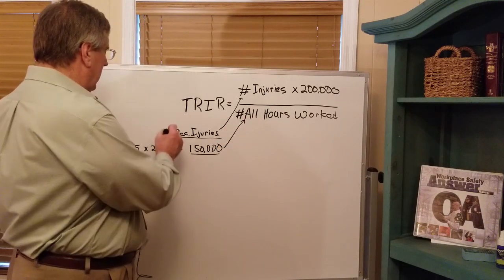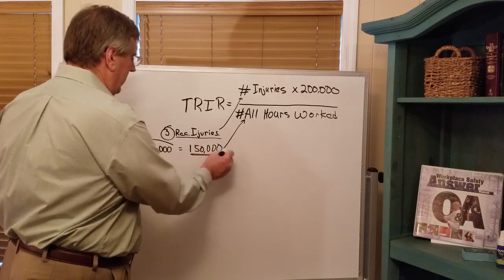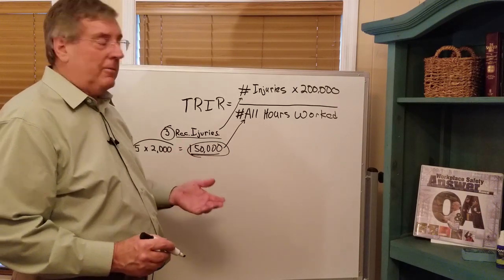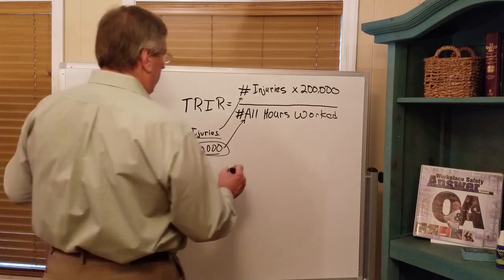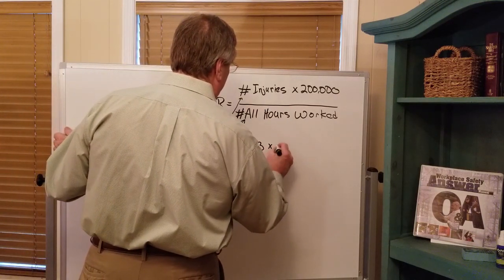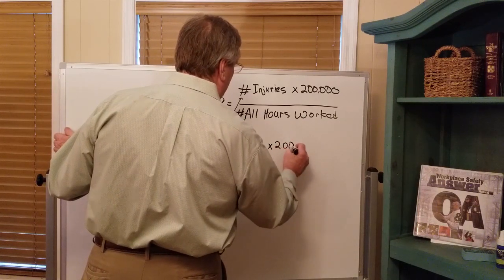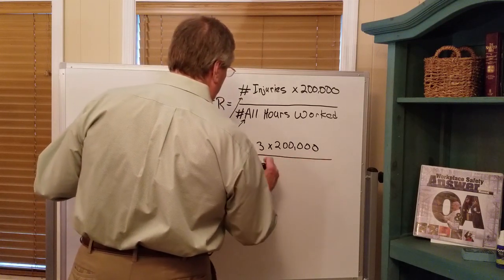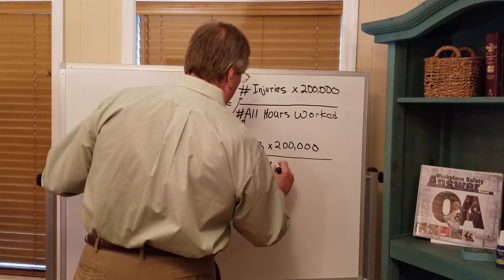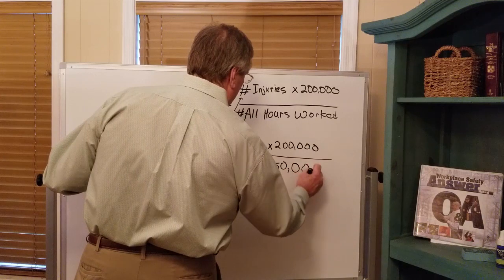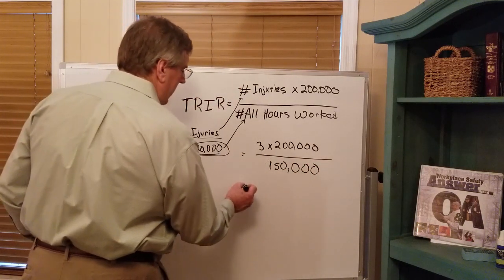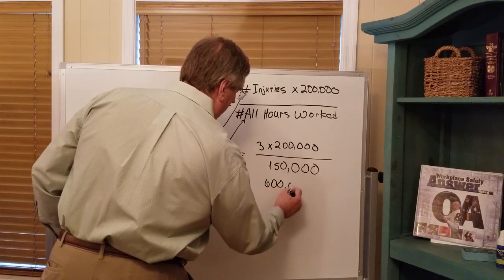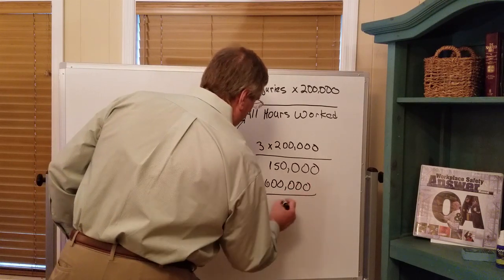Those are the only two numbers you need. To finish the calculation: we take 3 × 200,000 in the numerator, divided by 150,000 in the denominator. That equals 600,000 divided by 150,000, which gives us a TRIR of 4.